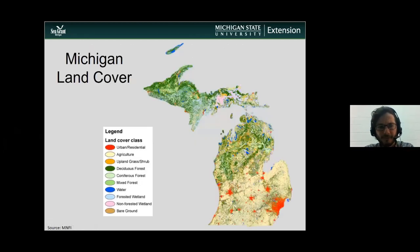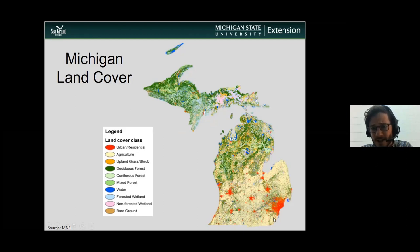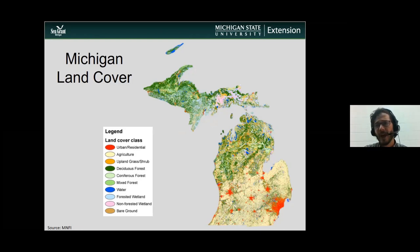A map from the Michigan Natural Features Inventory shows Michigan's land cover in more detail. You can see the obvious north-south gradient between different land uses — the tan areas showing a lot of agriculture, red for urban, then moving more into natural systems. We talk a lot about land cover and land use because as we remove natural vegetation, we start to have greater impacts on our water.